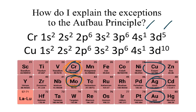And copper, you'd expect it to be 4s² 3d⁹, but it's actually 4s¹ 3d¹⁰. So the idea here is why are those happening?